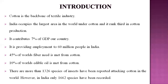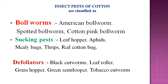Regarding insect pests, more than 1,326 species have been reported attacking cotton worldwide, and in India near about 1,662 species have been reported. Today we are going to discuss some pests, their nature of damage briefly, and the Integrated Pest Management strategies for cotton.